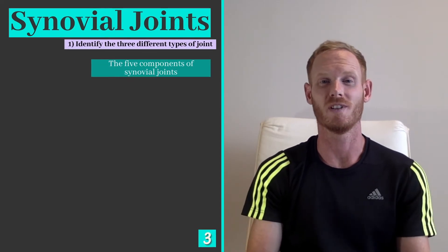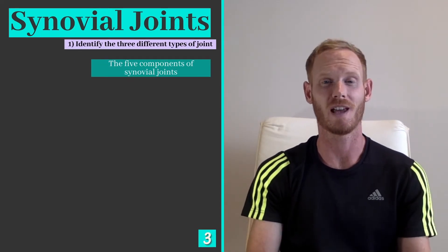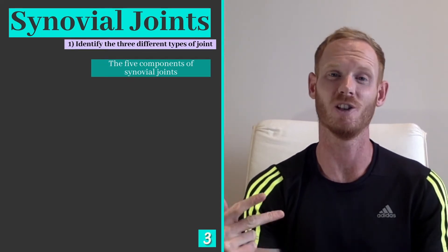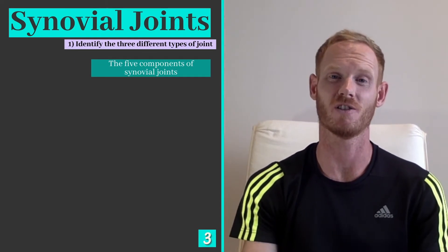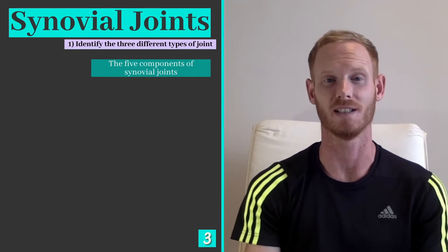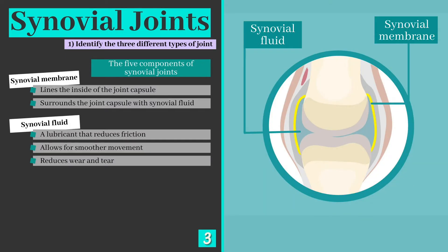Since synovial joints are so common and fundamental to movement, we need to look at their structure in a little bit more detail. The synovial membrane lines the inside of the joint capsule and secretes synovial fluid into the cavity. Synovial fluid is a lubricant and its role is to reduce friction. This not only allows for smoother movement but also reduces wear and tear.